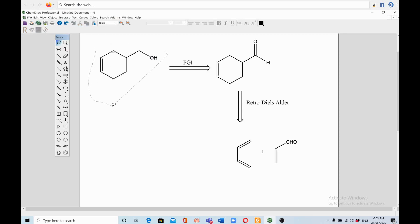So you start from this molecule which contains a ring and an OH group. You do functional group interconversion, you convert this OH group into aldehyde group, this one. And then you rupture this ring apart, open it up into two components.